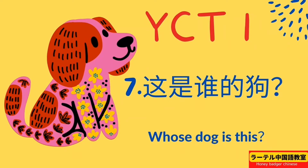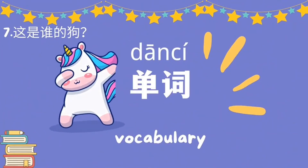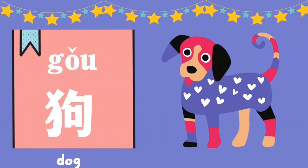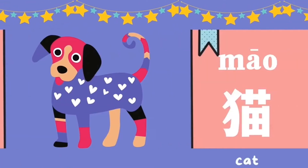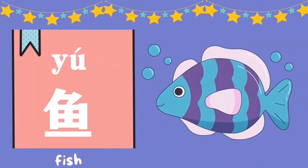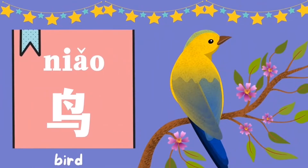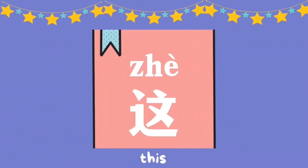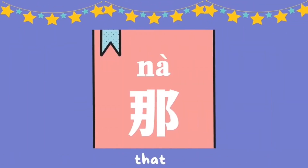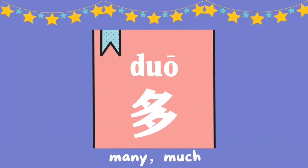今天我们学习YCTE第七课：这是谁的狗。单词：狗、猫、鱼、鸟、这、那、看、不准、多。